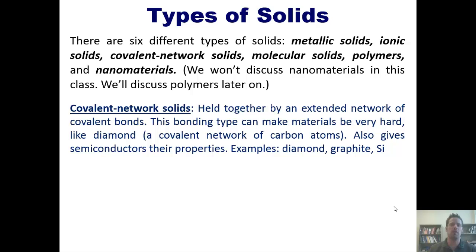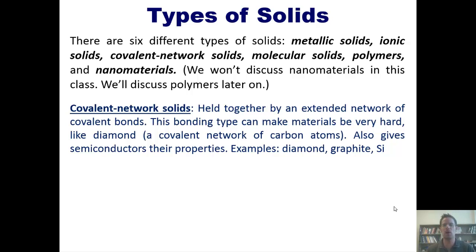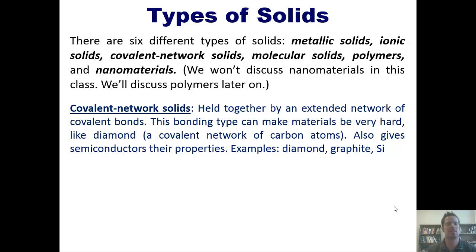These contrast with covalent network solids, which are held together by an extended network of covalent bonds, not metallic or ionic bonds. This bonding type can make materials very hard, such as diamond, which is a covalent network of carbon atoms. It also gives semiconductors their properties. Examples include diamond, graphite, and silicon.